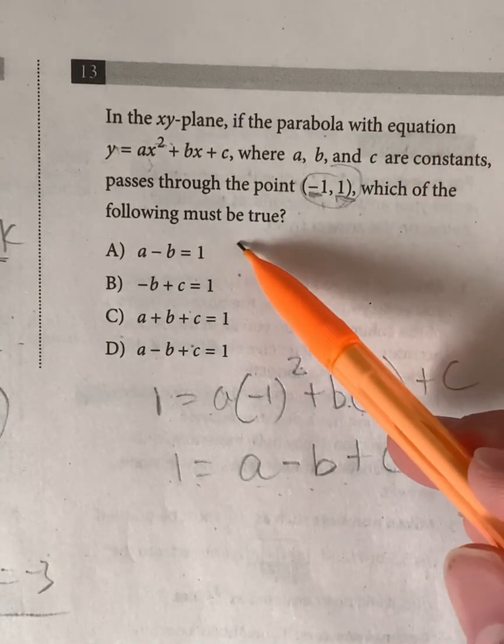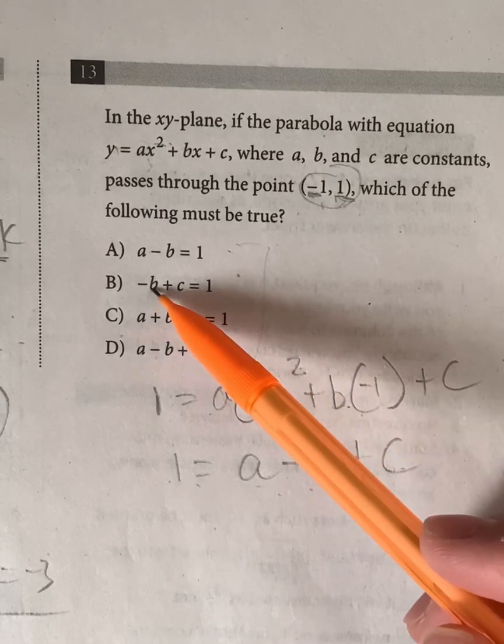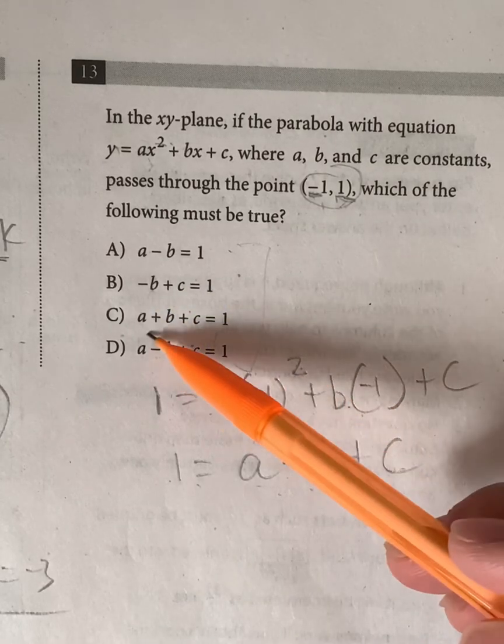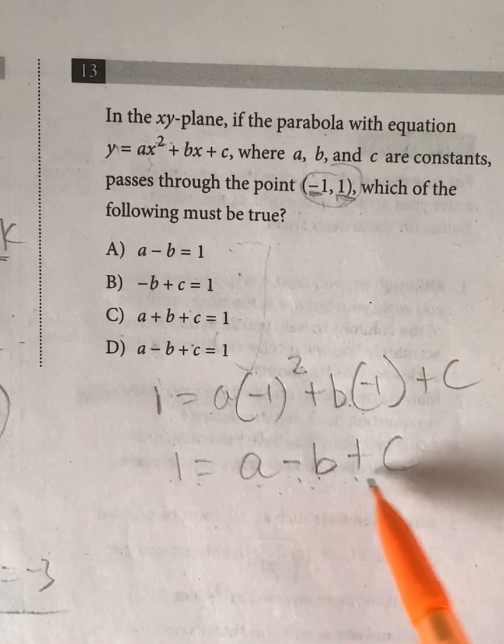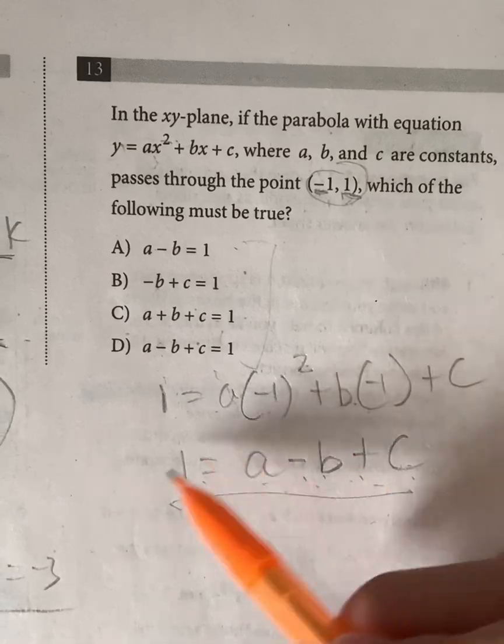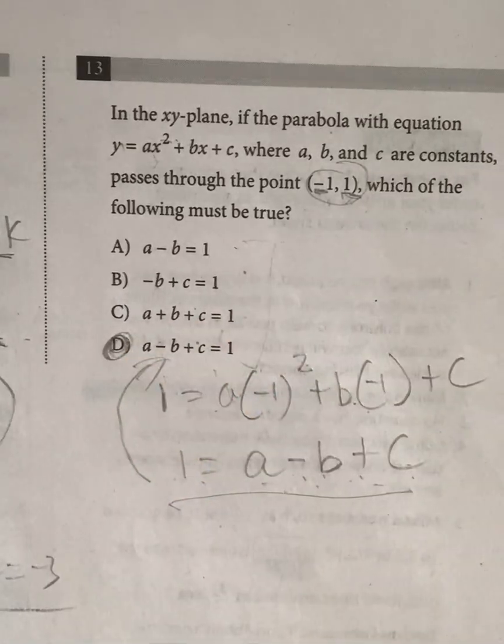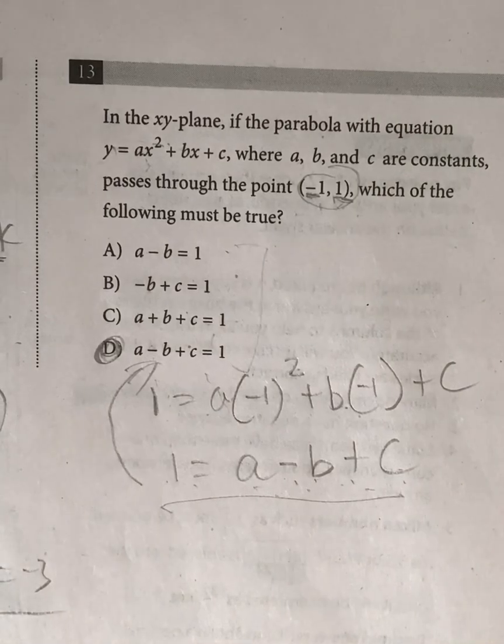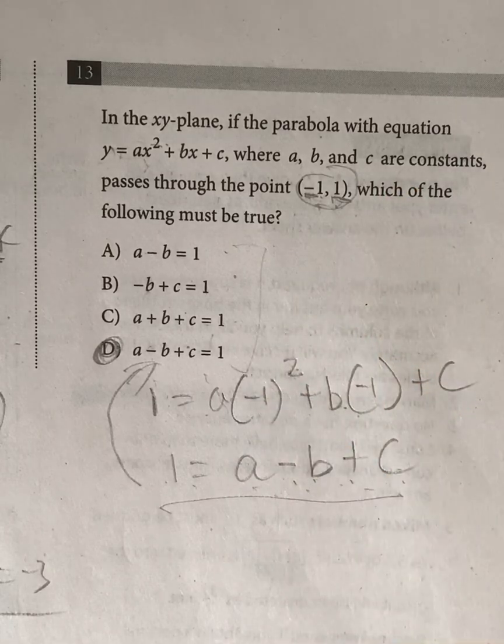Are there any answer choices that look similar? So a doesn't really look like it. b doesn't really look like it. How about c? A plus b plus c is equal to 1. Eh, not exactly. But d, we have a minus b plus c is equal to 1. And that is exactly what we have. Meaning your answer has to be d. So all we had to do in this question was basically just plug in our x and y values that are already given and just see which ones match.